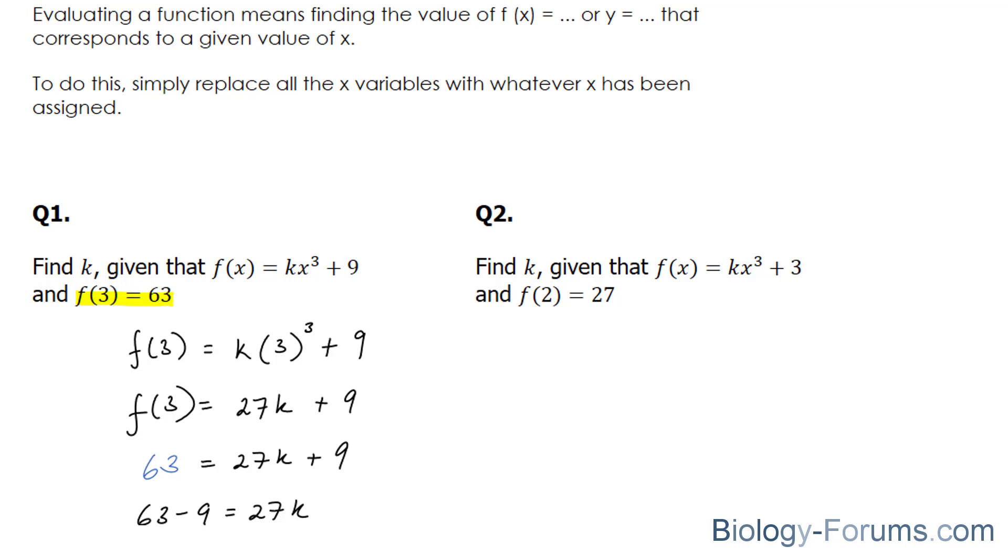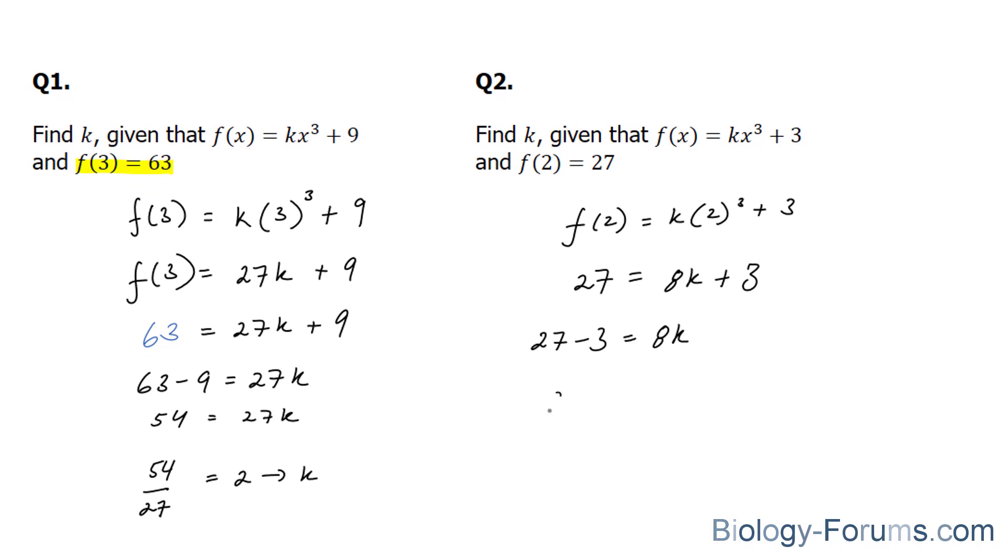So once again, we'll set x as 2, k times 2 to the power of 3 plus 3 gives us 8k plus 3. And f at 2, as stated here, is 27. So we'll bring this 3 over, 27 minus 3, because you're bringing the 3 over, that gives you 24. And therefore, k is equal to 24 over 8, which is 3.